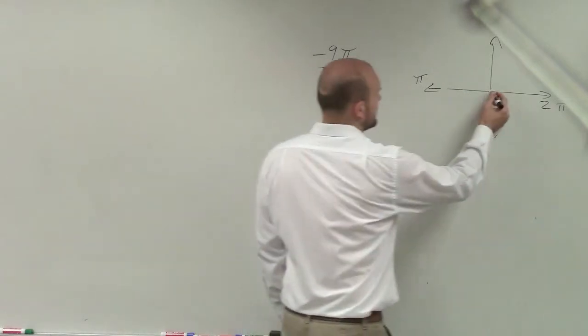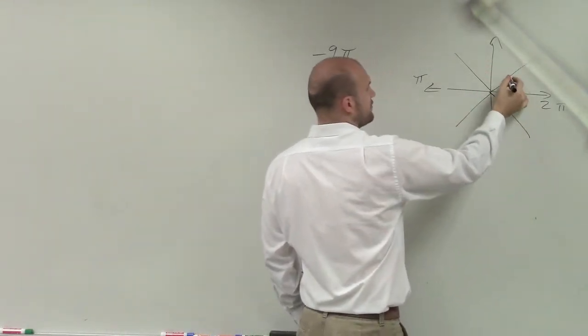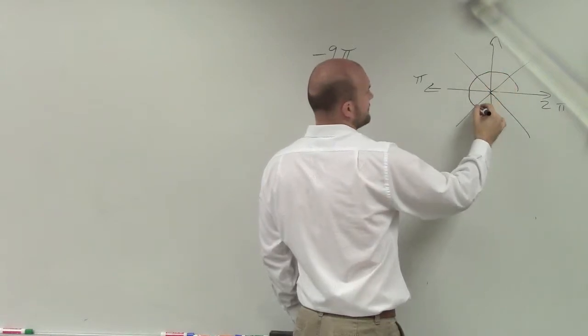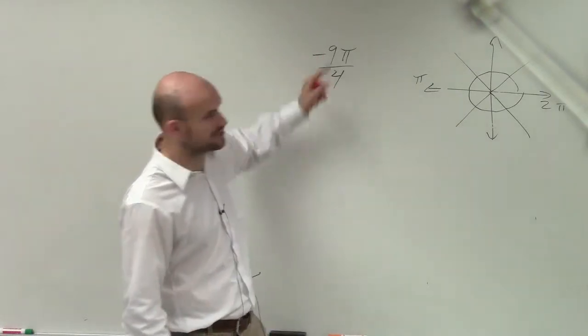So what I like to do is to break this up into fourths. So that's 1 fourth, 2 fourths, 3 fourths, 4 fourths, 5 fourths, 6 fourths, 7 fourths, 8 fourths. But actually, we're going in the negative direction, right?